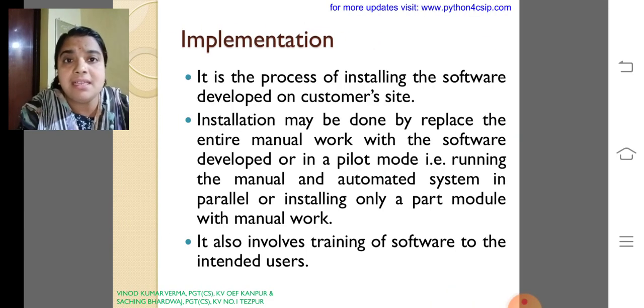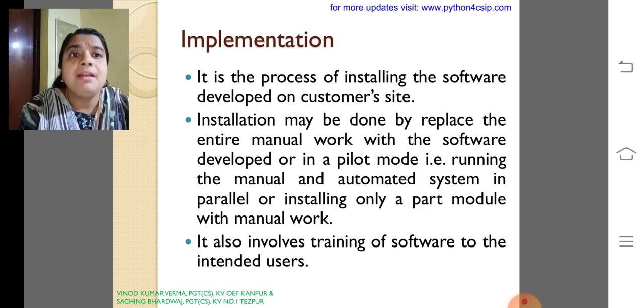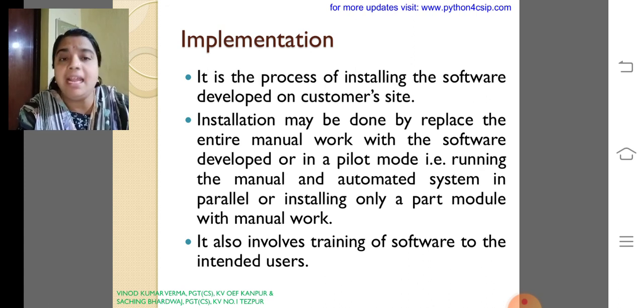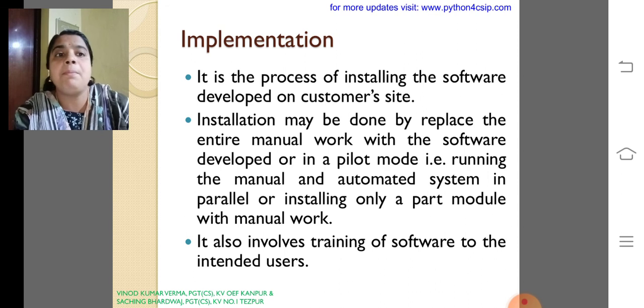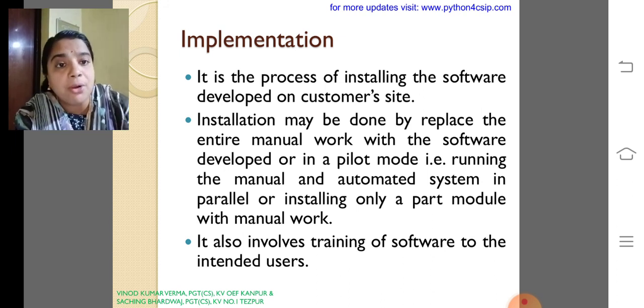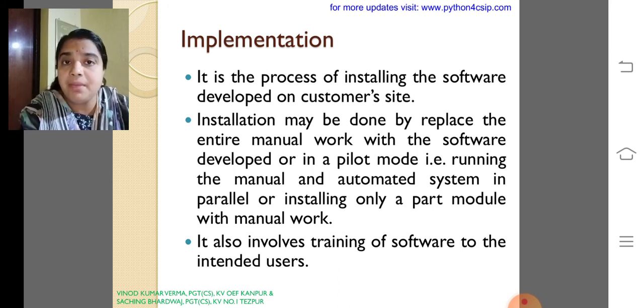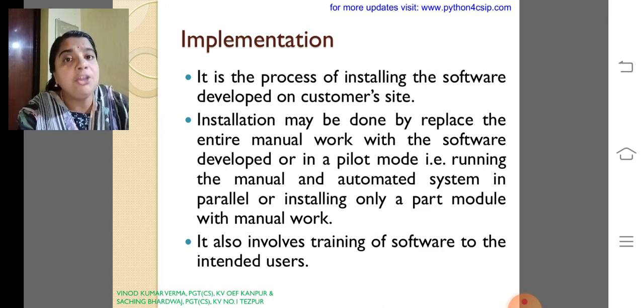The next one is implementation. It is the process of installing the software developed on the customer's site. Installation may be done by replacing the entire manual work with the software developed, or in a pilot mode that is running the manual and automated system in parallel, or installing only a part of module with the manual work. It also involves training of software to be intended users. Implementation is nothing but the usage of our software in a particular area.